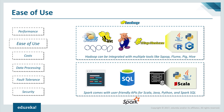Next, ease of use. Spark comes with user-friendly APIs for Scala, Java, Python, and Spark SQL. Spark SQL is very similar to SQL, making it easier for SQL developers to learn. Spark also provides an interactive shell for developers to query and perform other actions with immediate feedback. For Hadoop, you can ingest data easily using shell or by integrating it with multiple tools like Scoop and Flume.